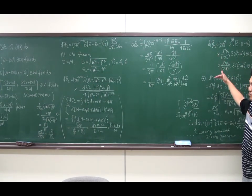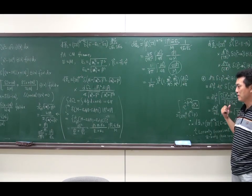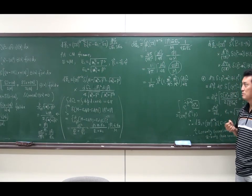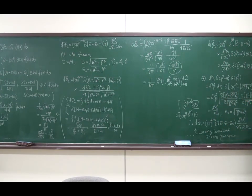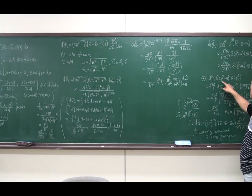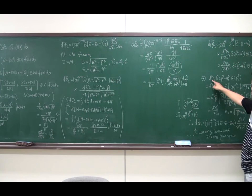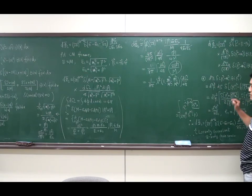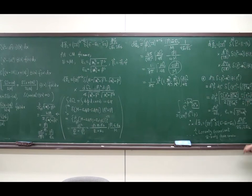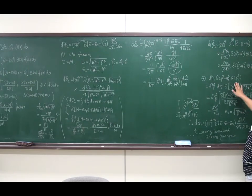We will simplify this expression and reparametrize the phase space in a simple system — usually, we choose the center of mass frame. Let us calculate this part first. We have the fourth-power measure and the delta function, and they can be separated into an energy part and a momentum part. The energy part can be integrated out using the delta function, whose argument is energy squared minus momentum squared minus mass squared, which gives energy equal to the square root of momentum squared plus mass squared — that is just the on-shell condition.